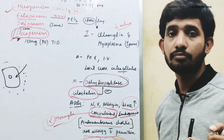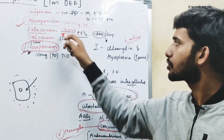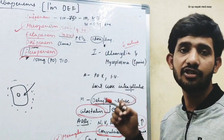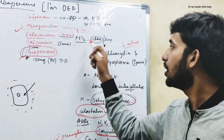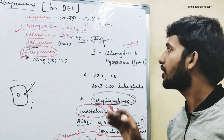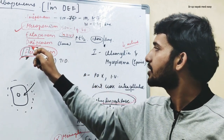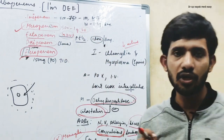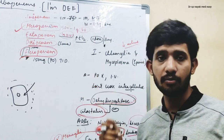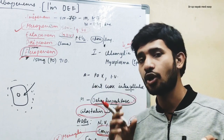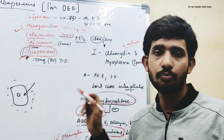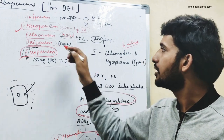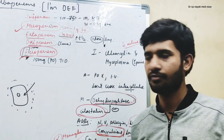Ertapenem is similar to meropenem; its common dose is 1 gram IV. Importantly, ertapenem has a very high half-life compared to imipenem and meropenem, so only one dose per day is sufficient. Doripenem is similar to meropenem and ertapenem. Finally, faropenem is the only carbapenem available in oral form — 150 mg tablets given twice or three times daily due to its low half-life.